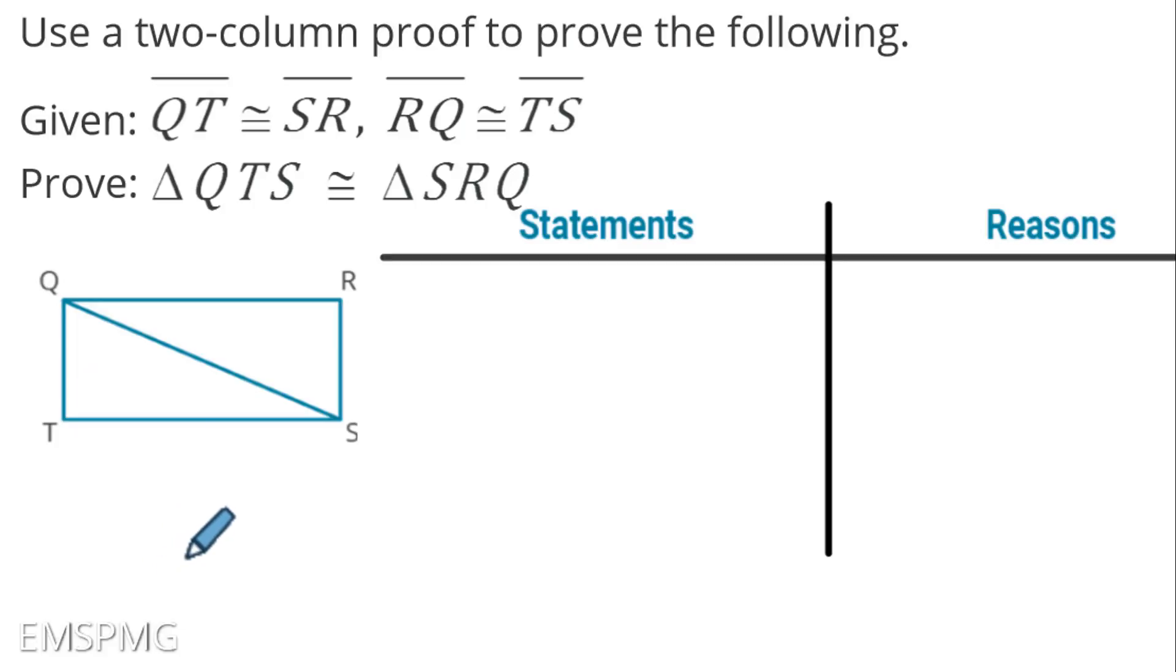Let's look at one example. Our job is to use a two-column proof to prove the following. We're given these pieces of information. We need to prove that this is true. Now, let's make sure we understand. Anytime we're given information, this is where we want to start our proof. And we want to prove something, this is where I end it. This is the answer. This is what I'm trying to work my way towards.